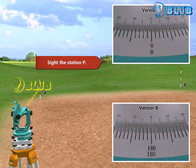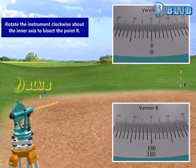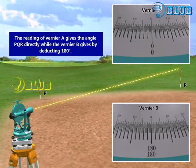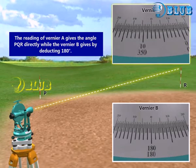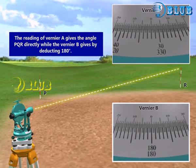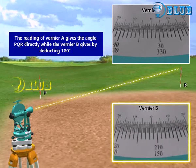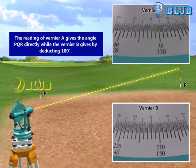sight the station P. Rotate the instrument clockwise about the inner axis to bisect the point R. The reading of Vernier A gives the angle PQR directly, while Vernier B gives it by deducting 180 degrees.